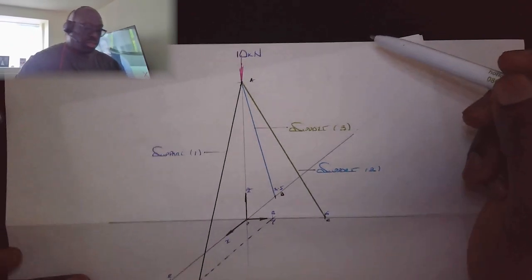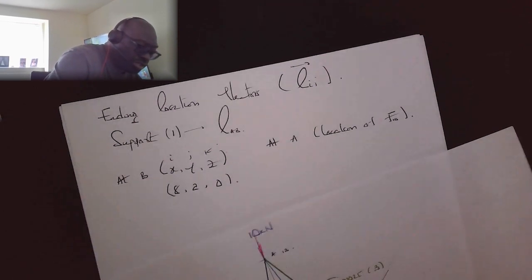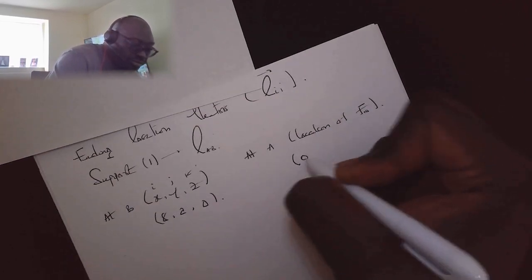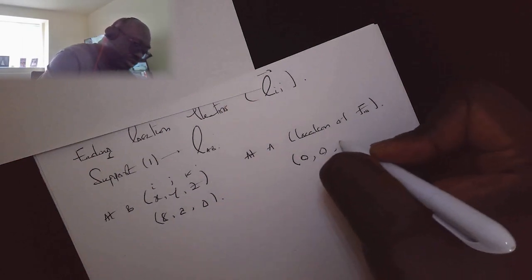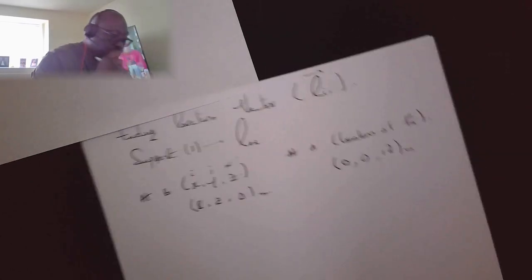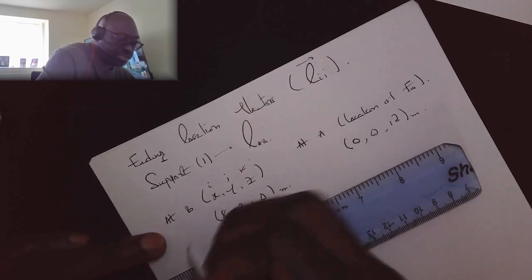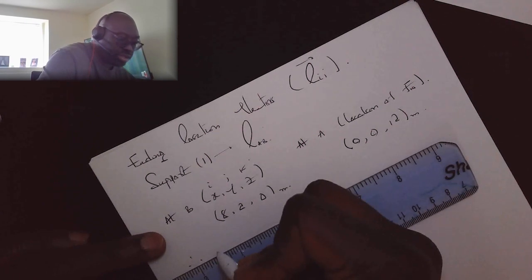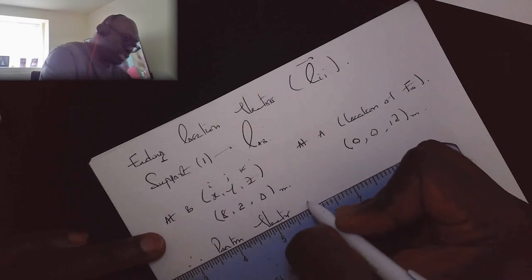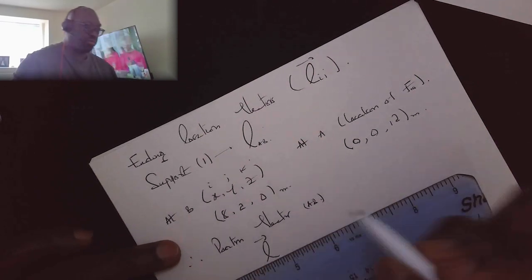So we've done that. So therefore, position vector AB, so that is our rho vector AB, will be equal to OB minus OA, and we can call that in meters. So this is OB and that is OA.